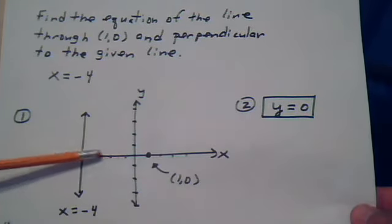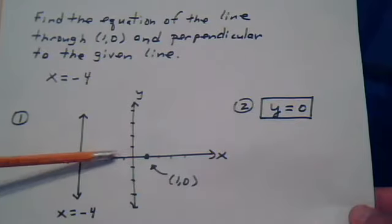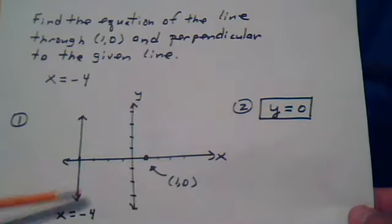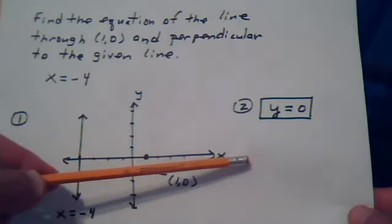So it would have to be this line. This line is perpendicular to x equals negative 4. And it goes through this point. And what is this line?